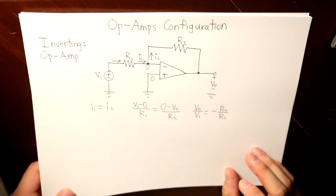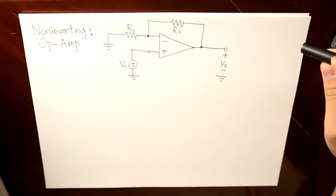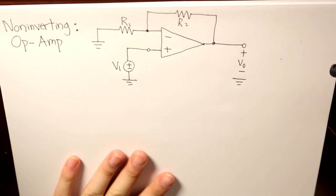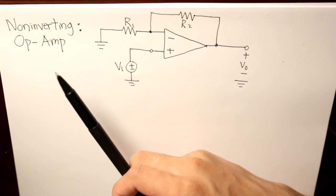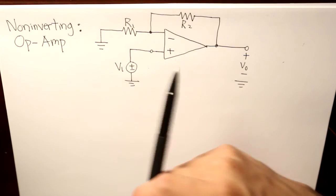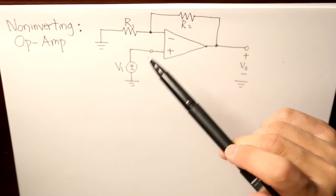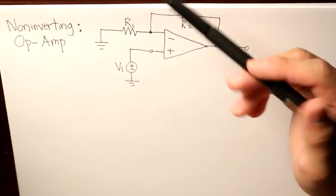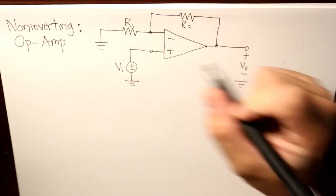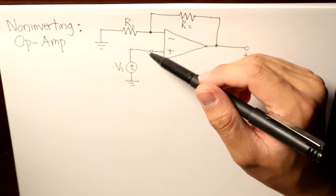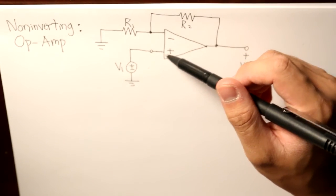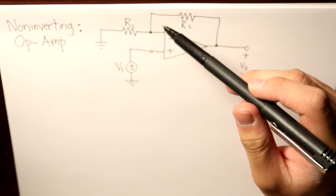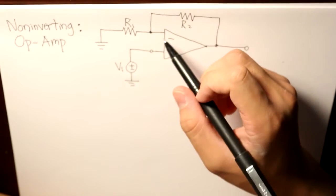Our second configuration is the non-inverting op amp. This time, our voltage source is connected at the positive input terminal. The current at V1 will be zero, but the voltage at the positive terminal will be V1. Because of that, the negative input terminal is also going to contain the same magnitude of voltage, so it is also V1.